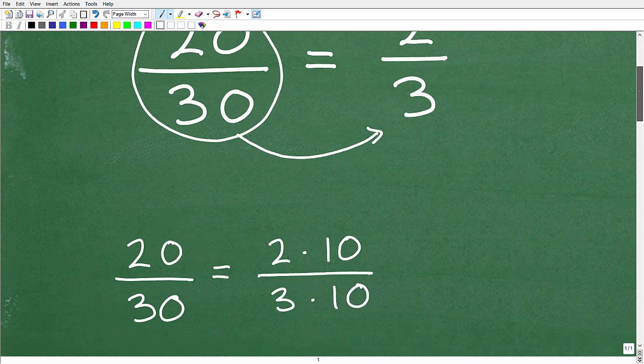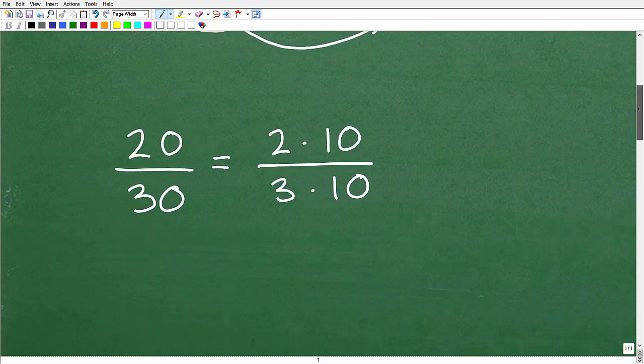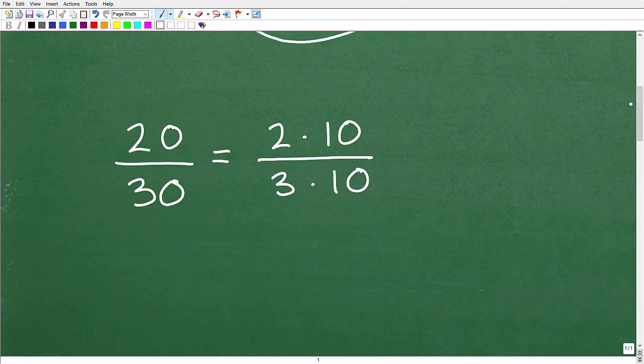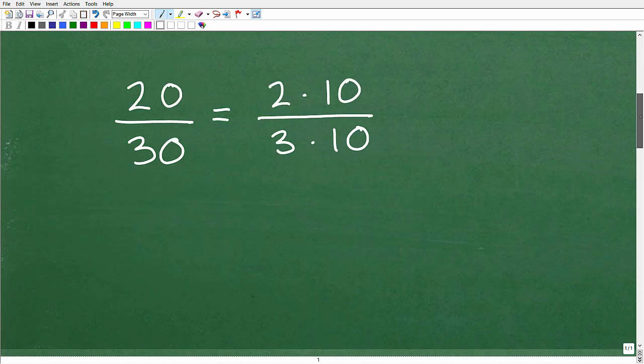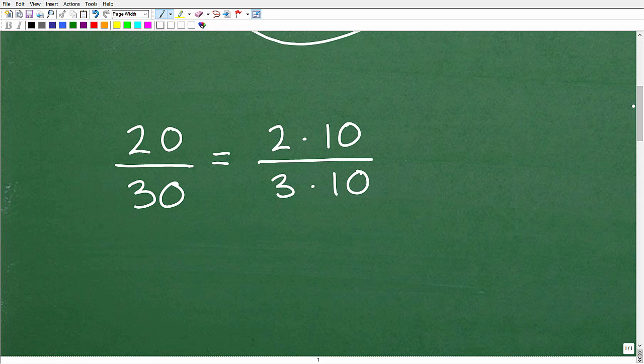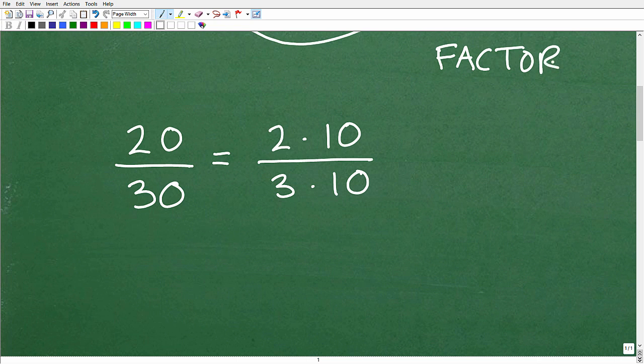All right, so let's talk about this example, 20 over 30. Now, the essence of reducing a fraction has to do with your ability to factor. So what are we talking about factoring? Let's go ahead and just quickly look at 20.